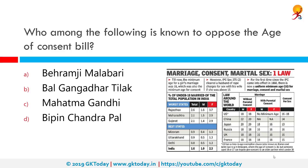Who among the following is known to have opposed the Age of Consent Bill? The Age of Consent Act of 1891 was legislation enacted in British India on 9th March 1891, which raised the age of consent for sexual intercourse for all girls, married or unmarried, from 10 to 12 years in all jurisdictions, and its violation was subject to criminal prosecution as rape.